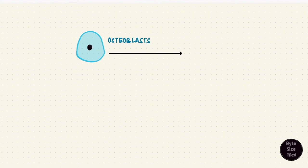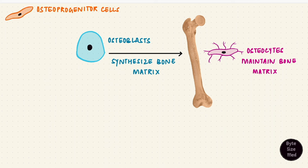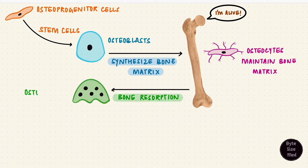Osteoblasts synthesize bone matrix and osteocytes maintain it. Osteoprogenitor cells can form these osteoblasts when required. Bone in the body is very much alive. It's a dynamic structure and as such both synthesis and resorption of bone happens. Synthesis of bone matrix is by the osteoblasts. Resorption of the bone matrix which would be destroying it is by osteoclasts.